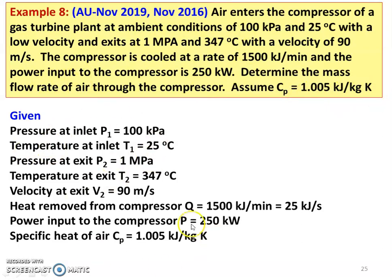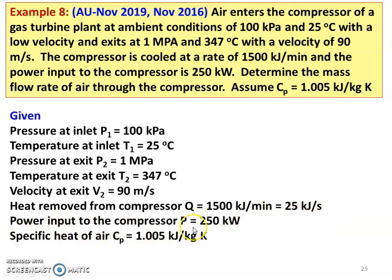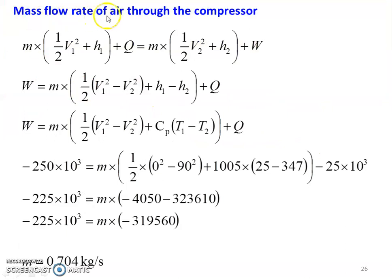Writing down the given data: pressure at inlet P1 = 100 kPa; temperature at inlet T1 = 25°C; pressure at exit P2 = 1 MPa; temperature at exit T2 = 347°C; velocity at exit V2 = 90 m/s. Heat removed = 1500 kJ per minute = 25 kJ per second (1500 ÷ 60 = 25). Power input to the compressor = 250 kW. CP = 1.005 kJ per kilogram Kelvin. We have to calculate the mass flow rate of the air.